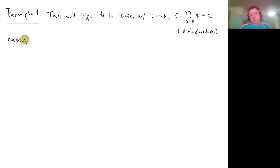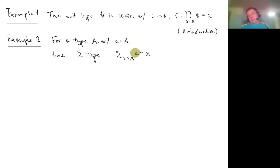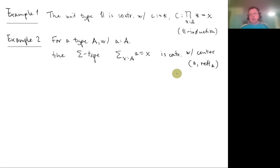Example two — something you've seen before but nonetheless very important: for a type A with an element a, the sigma type Σ(x : A), (a = x) is contractible, with center the pair (a, refl_a). The contraction is given by sigma induction and path induction.